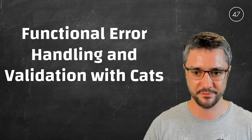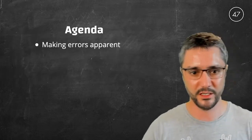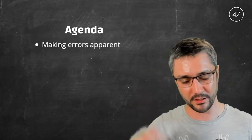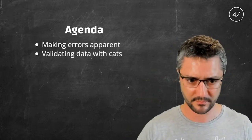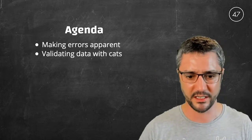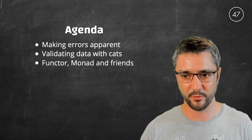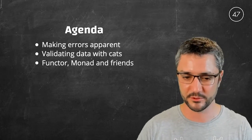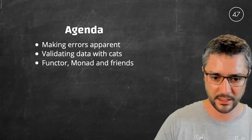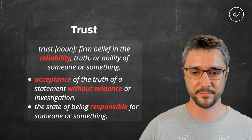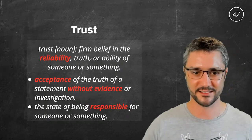But as the video introduction suggested, we will talk about making errors apparent in the type system, about validating data with the Cats library, and along the way, we'll meet a few famous type classes like functor, monad, and so on. And before we dive in, let's talk about the trust issues we have as software developers.